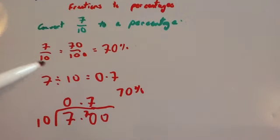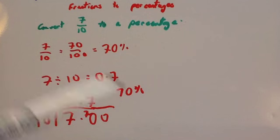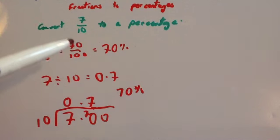This one's very useful whenever the bottom number is a factor of 100, whenever you can times it by 10 or by 2 or by 4 to get it to become 100. The second method is very useful because it will always work, and it's useful whenever the bottom number is a bit trickier, whenever it's not a factor of 100.